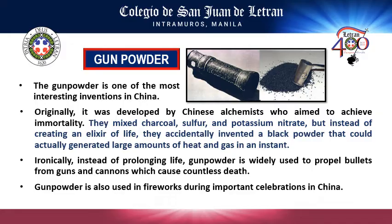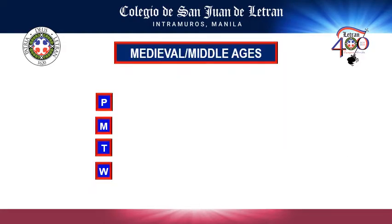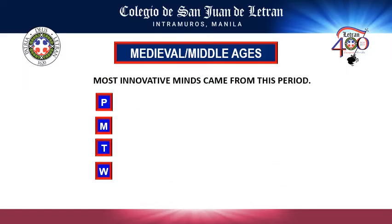Lastly is gunpowder. This gunpowder was accidentally made from mixing charcoal, sulfur, and potassium nitrate. Instead of creating an elixir of life, the Chinese accidentally invented a black powder that produces a large amount of heat and gas in an instant.